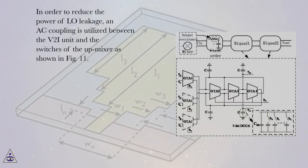In order to reduce the power of LO leakage, an AC coupling is utilized between the V2I unit and the switches of the up-mixer as shown in Fig. 11.